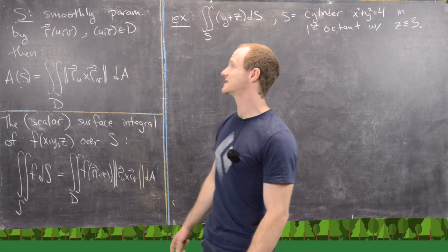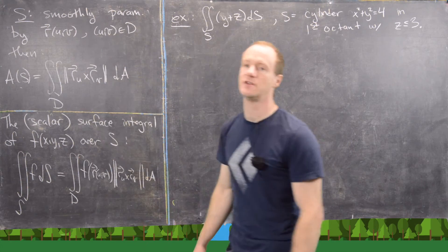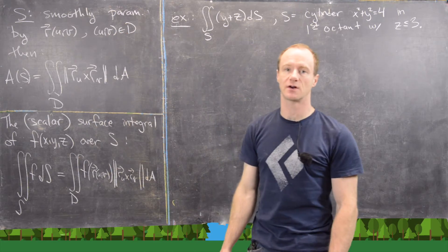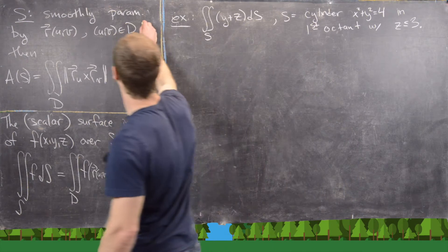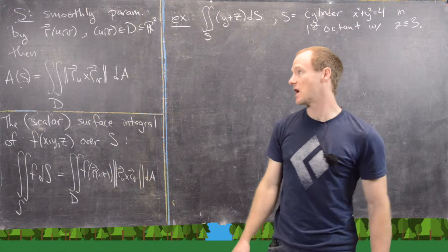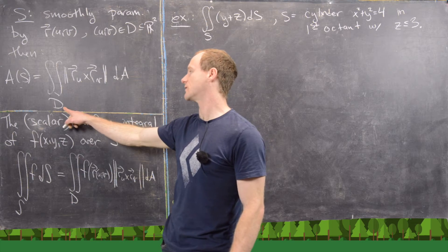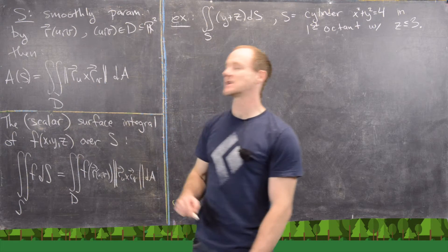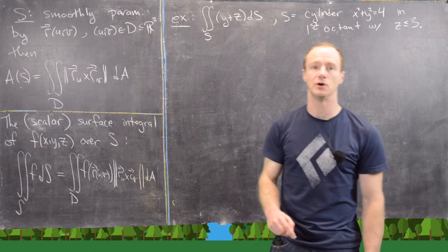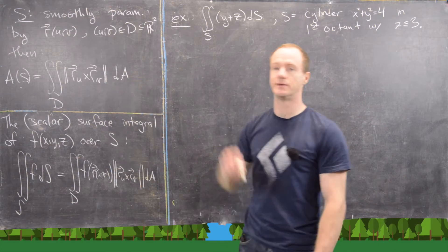Let's say S is smoothly parameterized by this vector function R of uv, where uv runs over a region D in the plane. Then the area of that surface is given by the double integral over D of the magnitude of the cross product of the partial derivative of R with respect to u and R with respect to v, times dA.